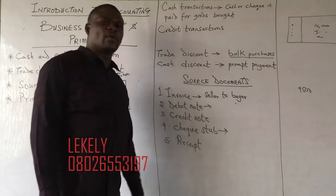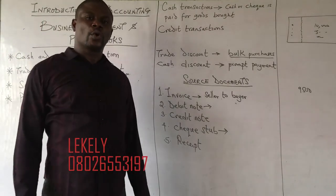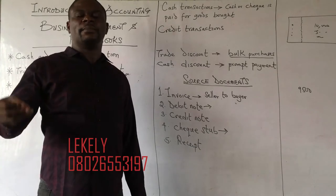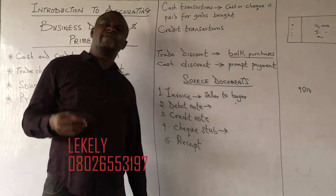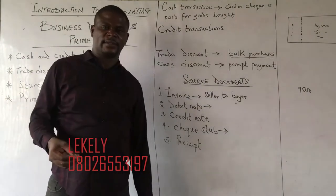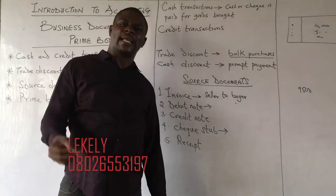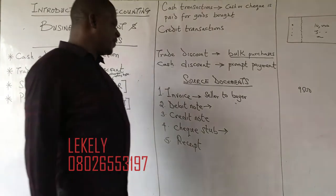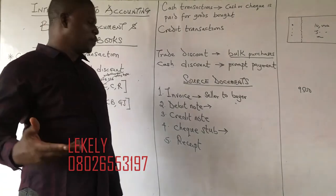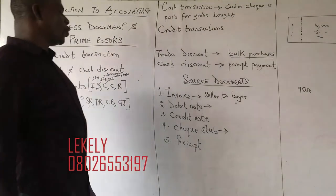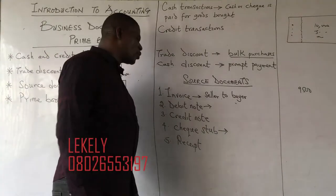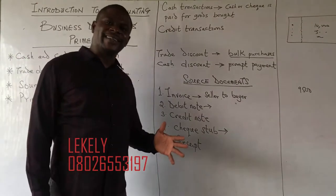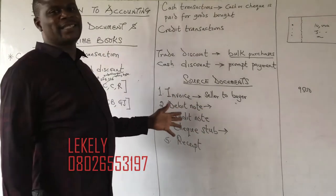Receipt is the document that shows that an item has been transferred from the seller to the buyer and that the buyer has paid. So a receipt is evidence of payment by the buyer to the seller for goods bought. These are what we call source documents — whenever you want to prepare accounts, these are the documents you can trace transactions to.